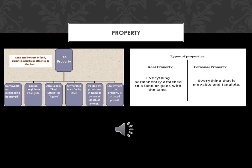Personal property is movable property. It's anything that can be subject to ownership except land. Real property is immovable property — it's land and anything attached to the land.